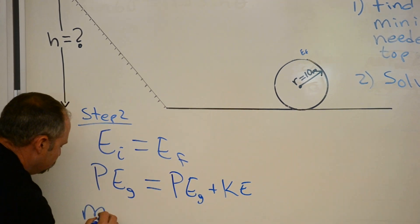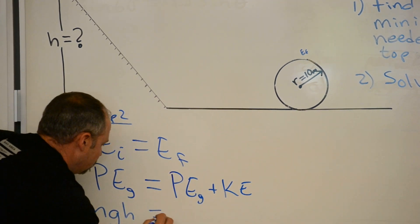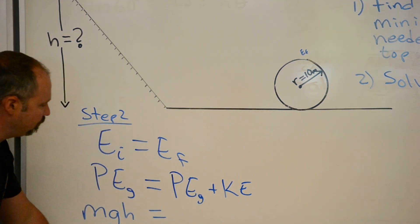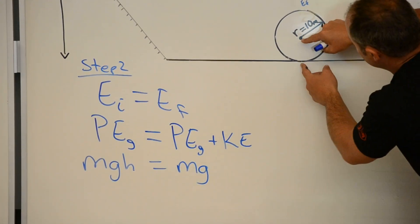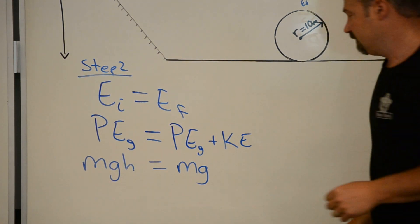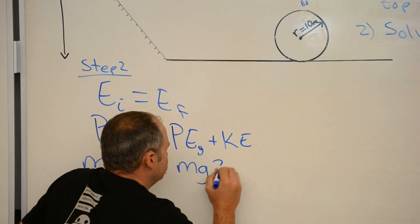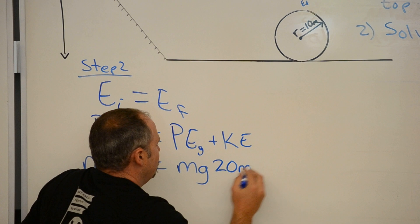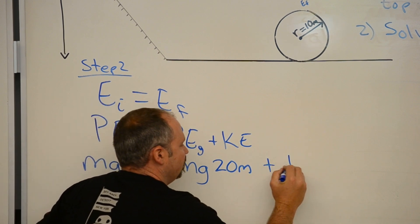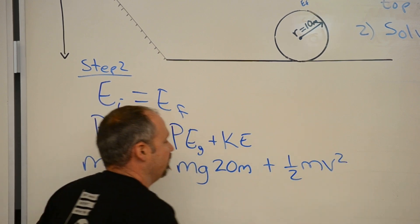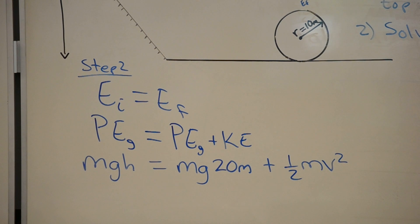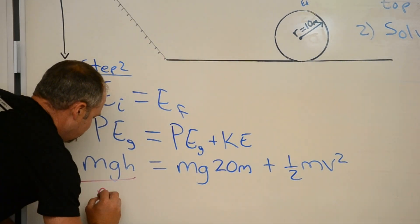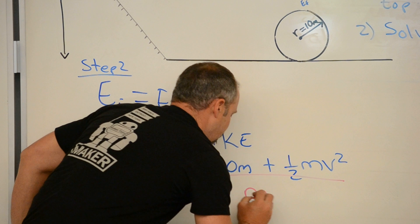Here we can plug in MGH. Here we can plug in MGH. What is the height? Well, radius of 10 meters, so 10 plus 10 is 20, so 20 meters. And then plus the kinetic energy, one-half MV squared. Now if we divide both sides by M, the M's go away.